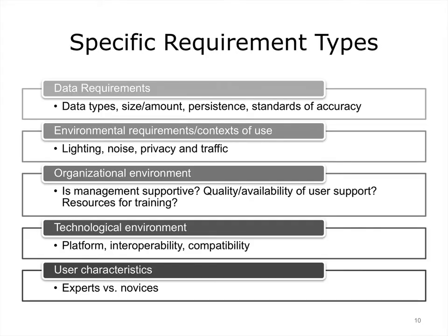This slide lists a range of specific requirement types. Some of these types will be more applicable in particular settings than others. For example, environmental factors such as noise would be especially important if the users had to listen for certain signals that designate warnings or the completion of a process, but would be less central in many other contexts. Understanding user characteristics is a subject that has not received sufficient attention. There is a great deal of variation in user types and in their skill level. It is hard to accommodate everybody, but understanding variation in user types, skill, and objectives could go a long way to meeting some of their needs.